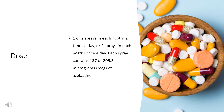For nasal dosage form (Astapro Allergy spray), for treatment of allergic rhinitis or other upper respiratory allergies: adults and children 12 years of age and older, 2 sprays in each nostril once a day or 1 or 2 sprays in each nostril 2 times a day every 12 hours; do not use more than 4 sprays in each nostril per 24-hour period. Children 6 to 11 years of age, 1 spray in each nostril 2 times a day every 12 hours; do not use more than 2 sprays in each nostril per 24-hour period; each spray contains 205.5 micrograms of azelastine. Children younger than 6 years of age, use is not recommended.